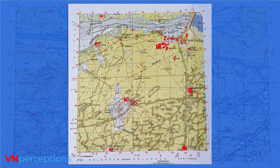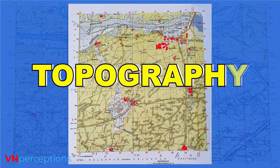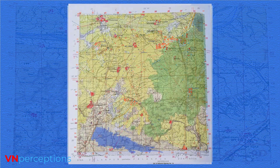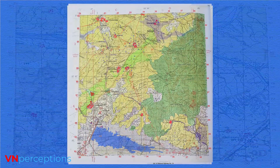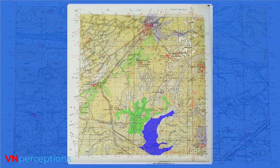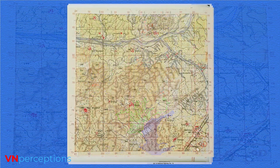Let us learn the chapter topography. Topographical maps are very colorful maps, and different colors explain to us different types of details.